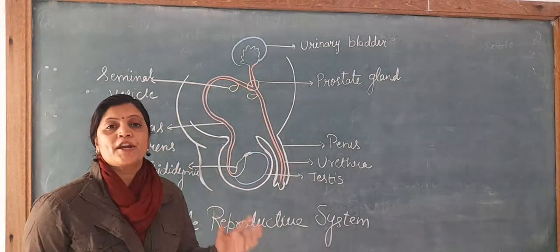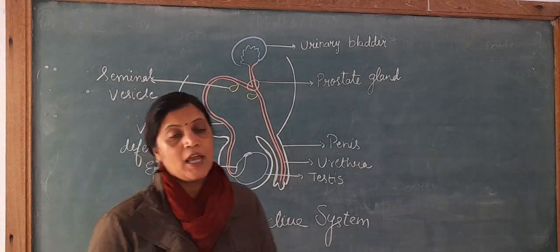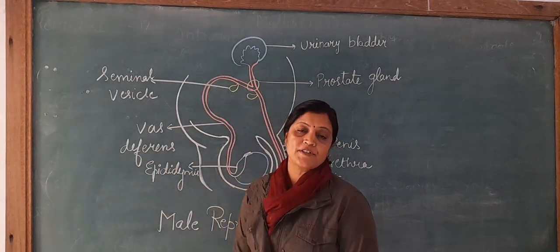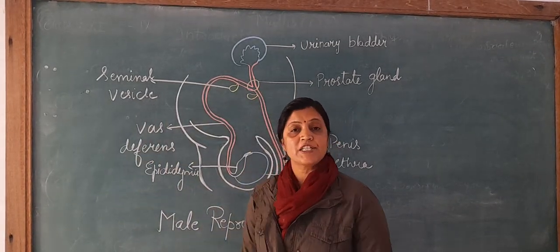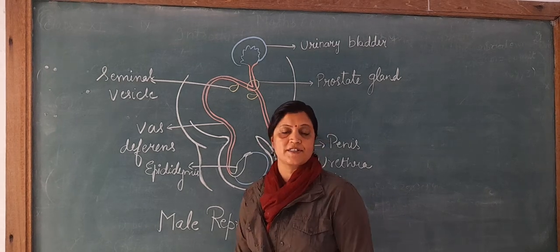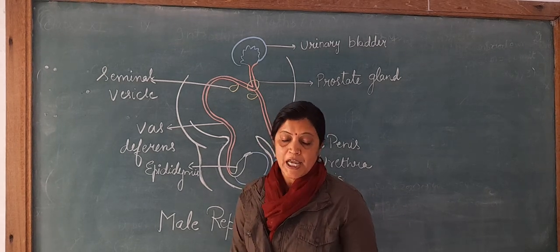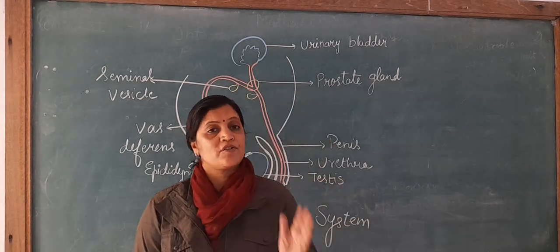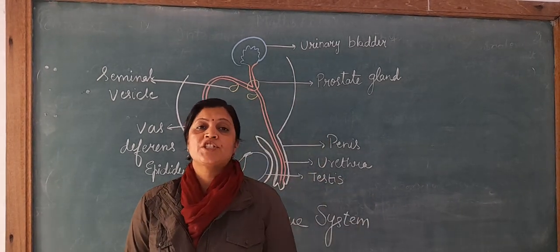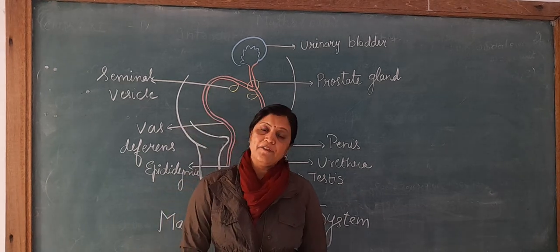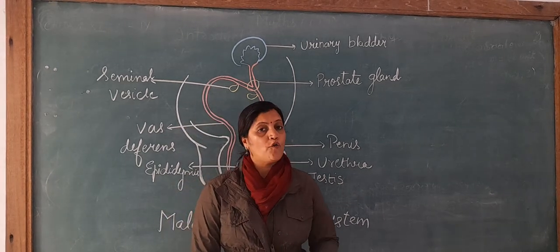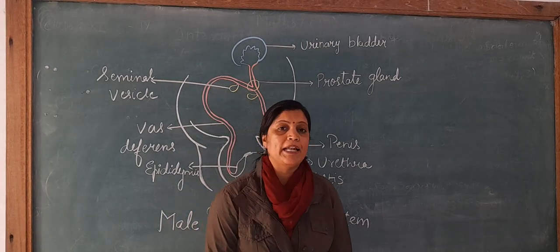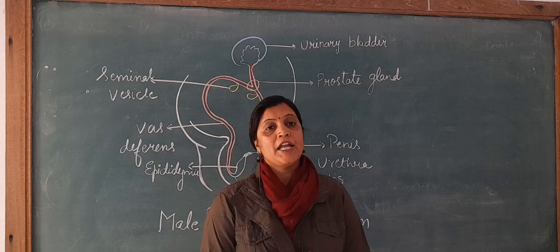In sexual reproduction in humans, the male reproductive system is present in males and the female reproductive system is present in females. In males, sperms are released, which are the male gametes. In females, ovules are released, which are the female gametes.